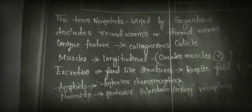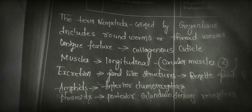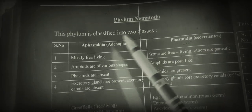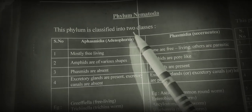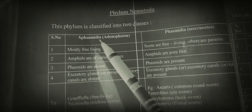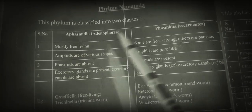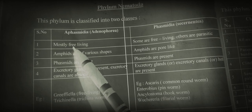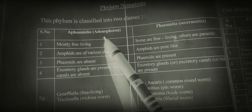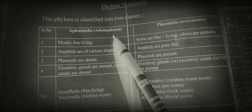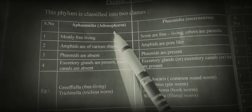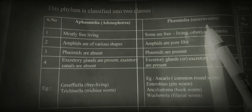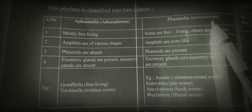Let us start the classification of phylum Nematoda. This phylum is classified into two classes: Aphasmidia, also called Adenophoria, and Phasmidia, also called Secernentia.